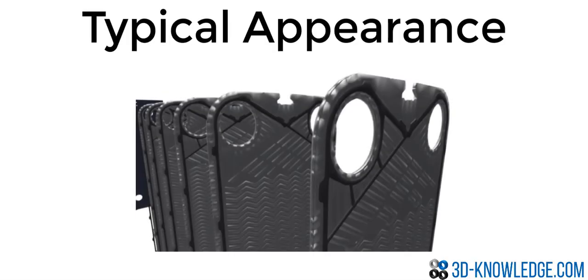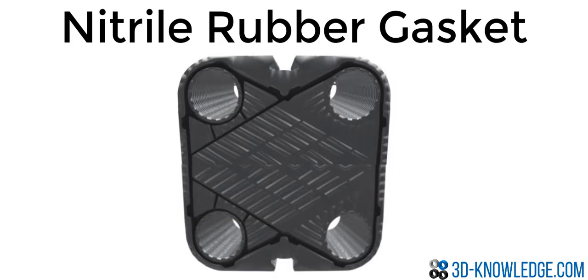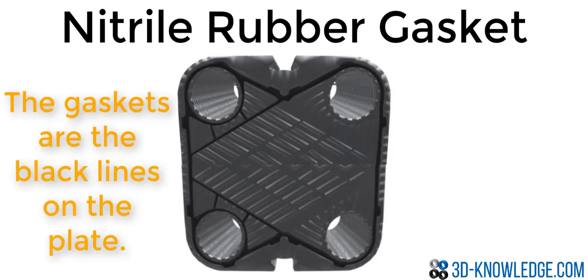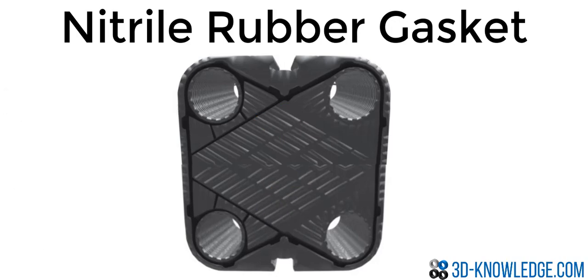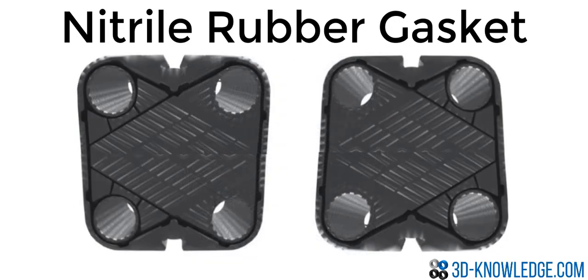Here we can see the appearance of a plate type heat exchanger when all the plates are separated out. One of the most interesting aspects is the nitrile rubber gaskets — these black gaskets that run around the edges of the plate. The reason for their unusual shape is that they direct flow in different directions for each plate. The gaskets look similar, but each plate rotated 180 degrees from the one before it, and this rotation changes the way the fluid moves through the heat exchanger.